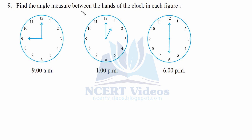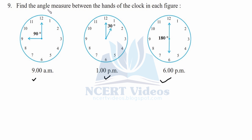Question 9: find the angle measure between the hands of the clock in each figure. There are three clocks. First, 9 AM — it is easy, it is 90 degrees or one-fourth of the whole revolution. Second, 1 PM — each hour makes 30 degrees (since 12 × 30 = 360), so 1 PM gives 30 degrees. Third, 6 PM — it is a straight angle, therefore 180 degrees, which is half of 360 degrees.